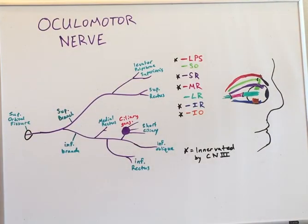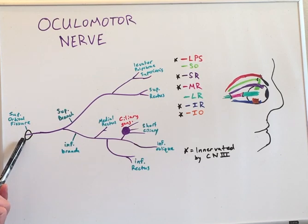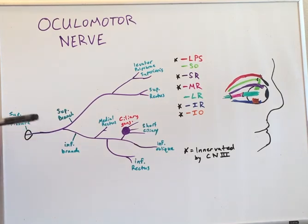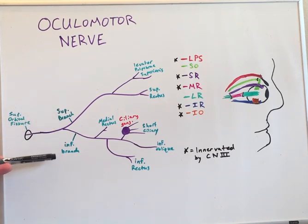Looking at the next diagram, we can observe the course of the ocular motor nerve after it exits through the superior orbital fissure. Here we see the ocular motor nerve continues and branches into a superior and inferior branch.